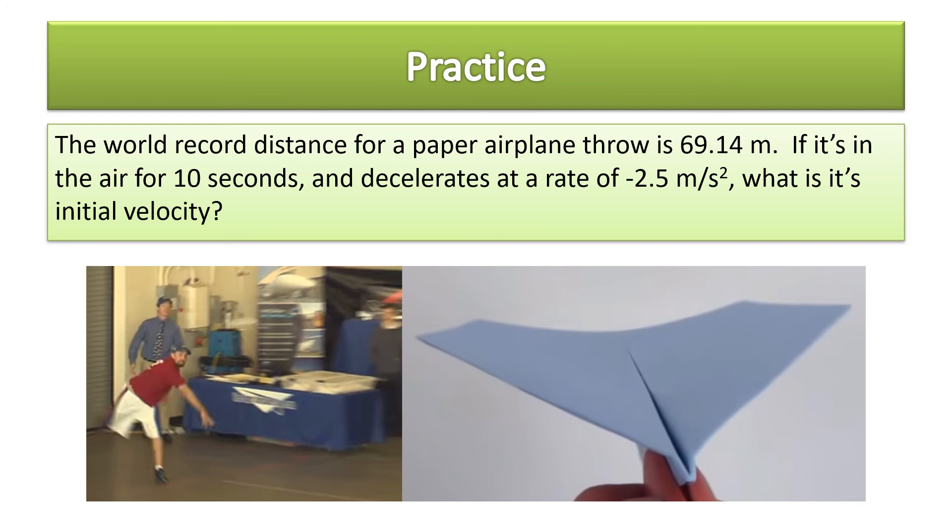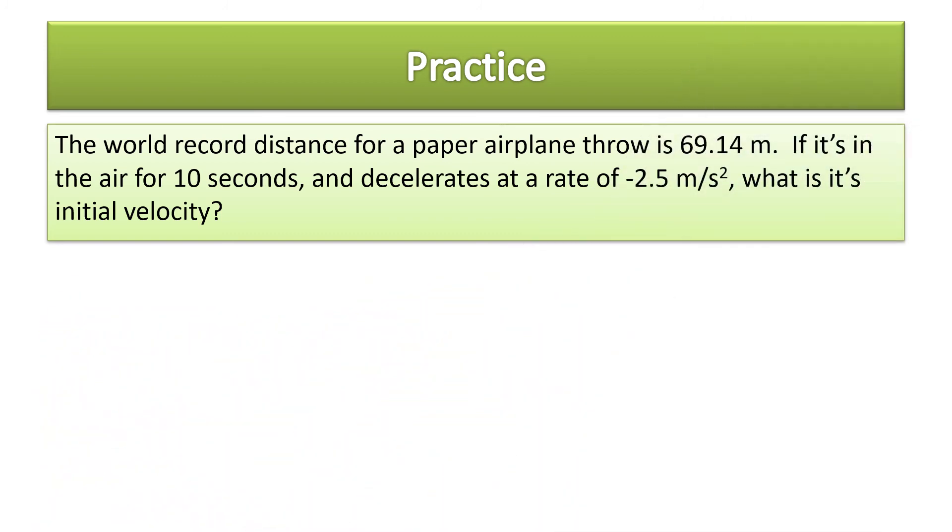So the world record distance for a paper airplane throw is 69.14 meters. If it's in the air for 10 seconds and decelerates at a rate of negative 2.5 meters per second squared, what is its initial velocity? And by the way, I got these numbers by looking at this YouTube video. I'll post this YouTube video in our extension folder, and I forgot to mention I'll also post something about that SR-71 Blackbird plane. There's another little fun link in there if you're interested.